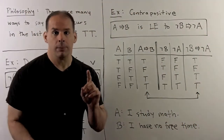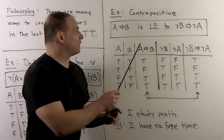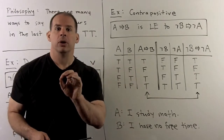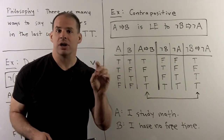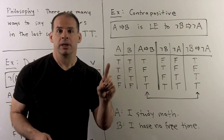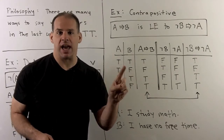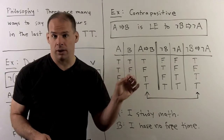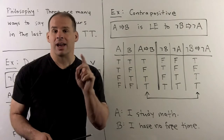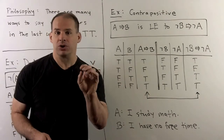For another example — one we'll use a lot — we have the contrapositive. Recall the converse of A implies B is B implies A, and we've seen that A implies B and B implies A are not logically equivalent — they have different truth tables. The contrapositive is the version of the converse that does work.